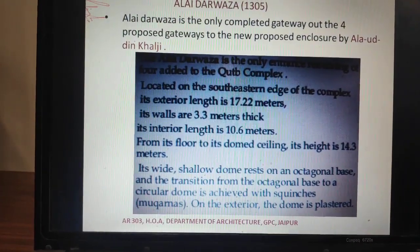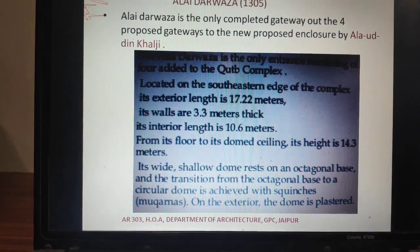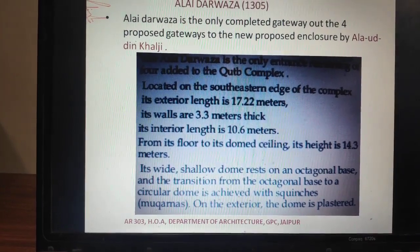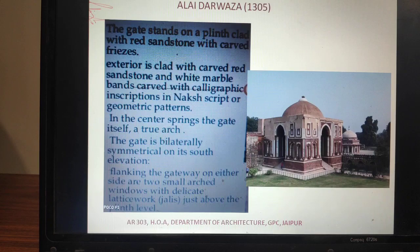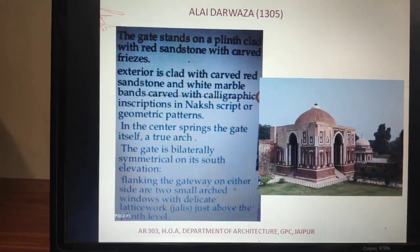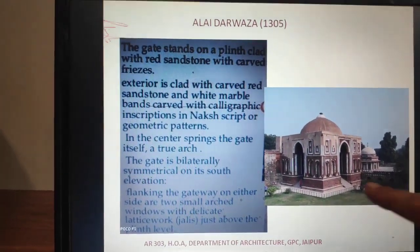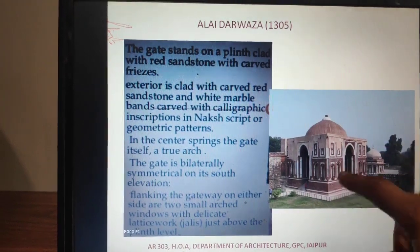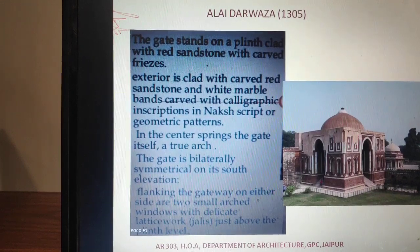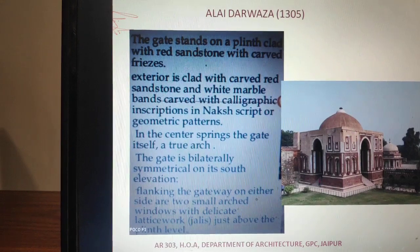The squinch system was explained in the slave dynasty lecture. The circular dome rests on an octagonal base. This building's exterior view is located on three sides, with central walls and a full double height. The complete construction uses red sandstone with white marble.